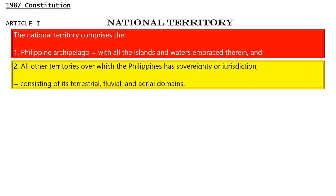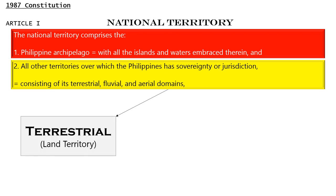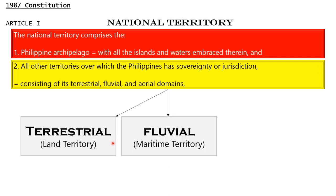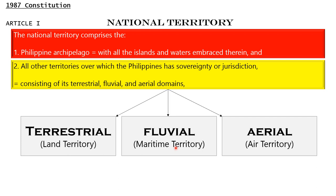So what are the components of the National Territory? Take note that there is the terrestrial or land territory, then you have the fluvial or maritime territory, and last you have the aerial or air territory.